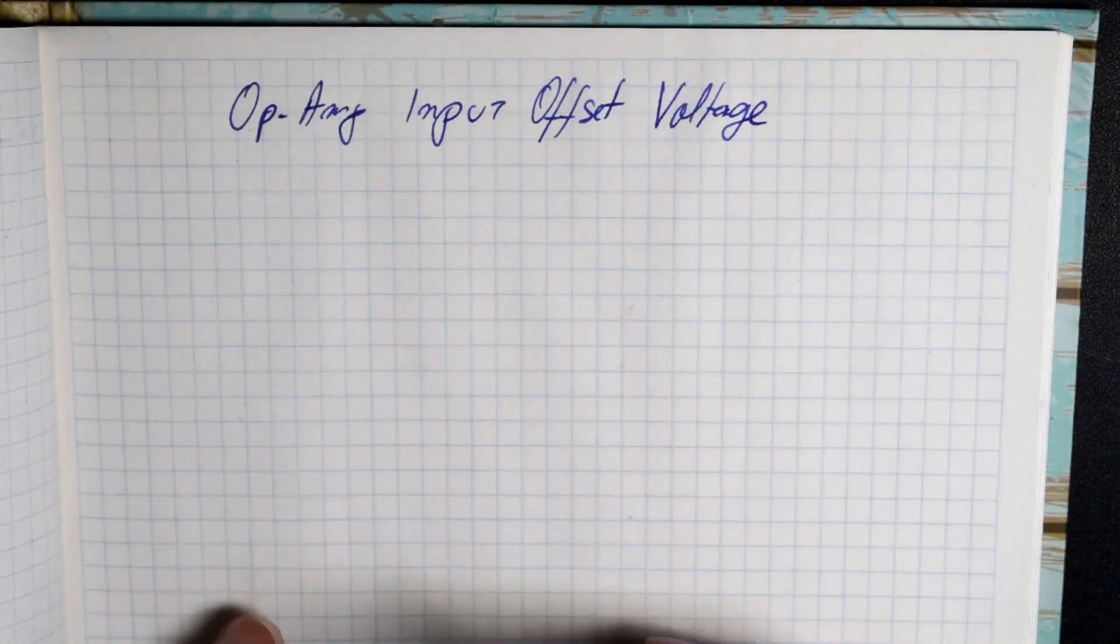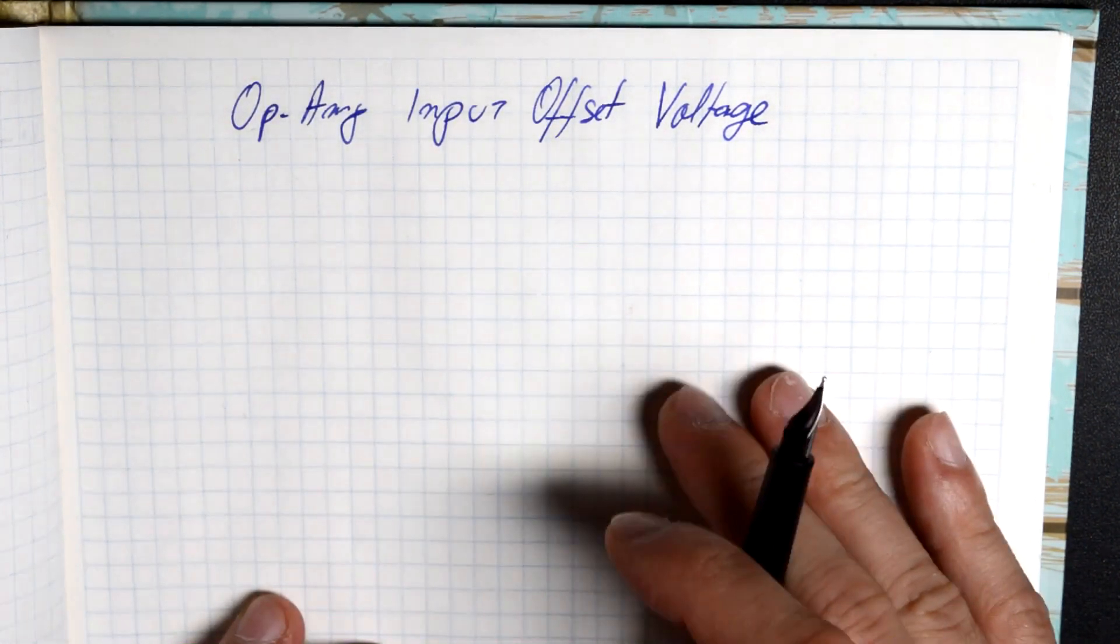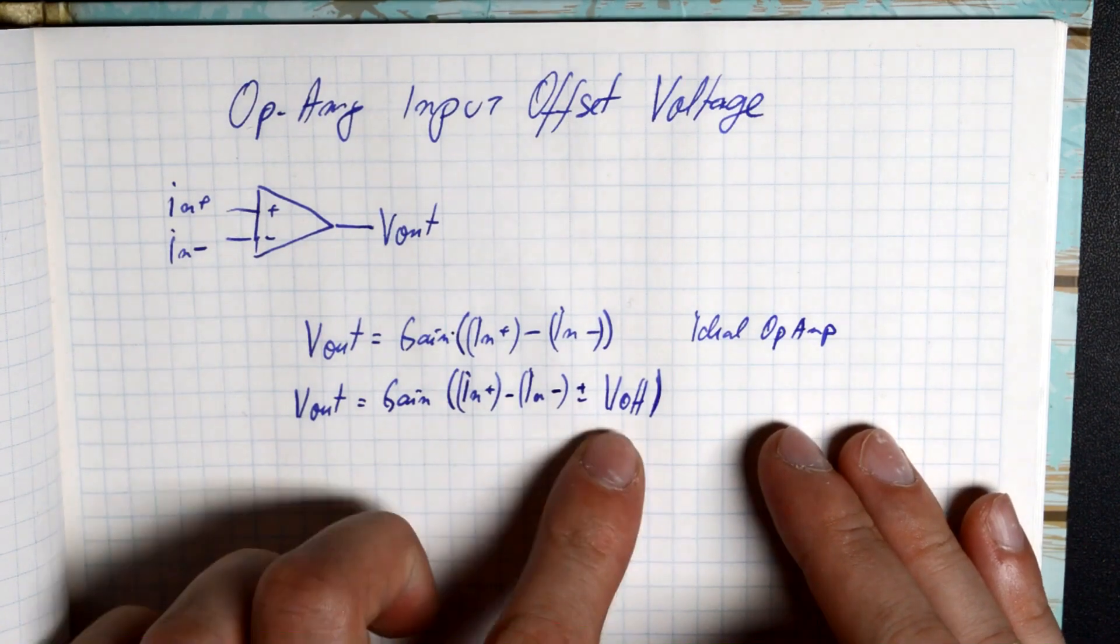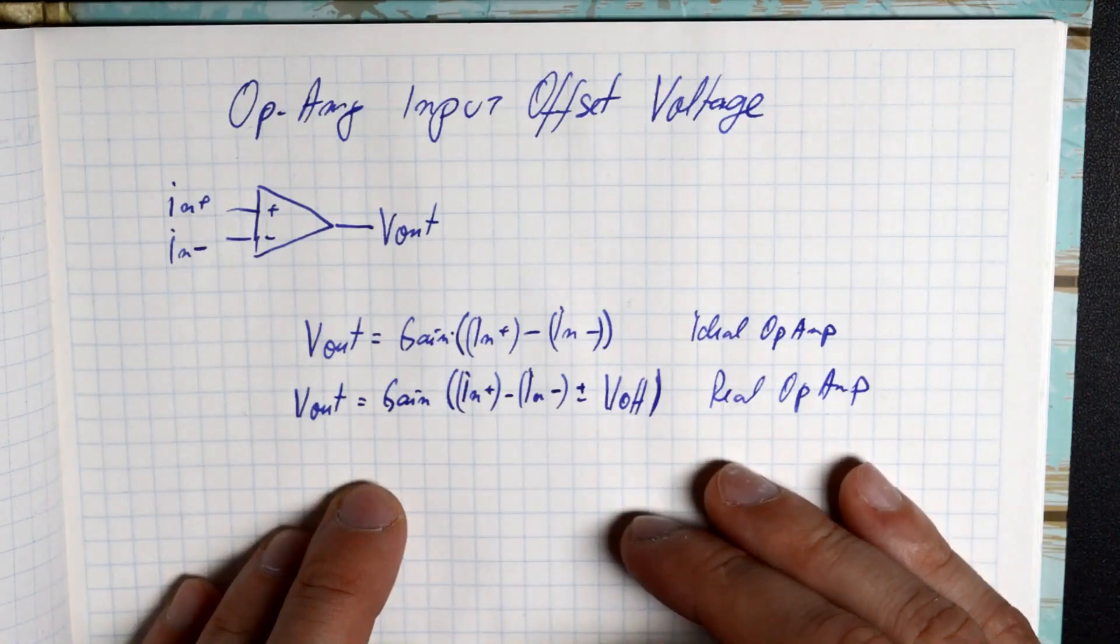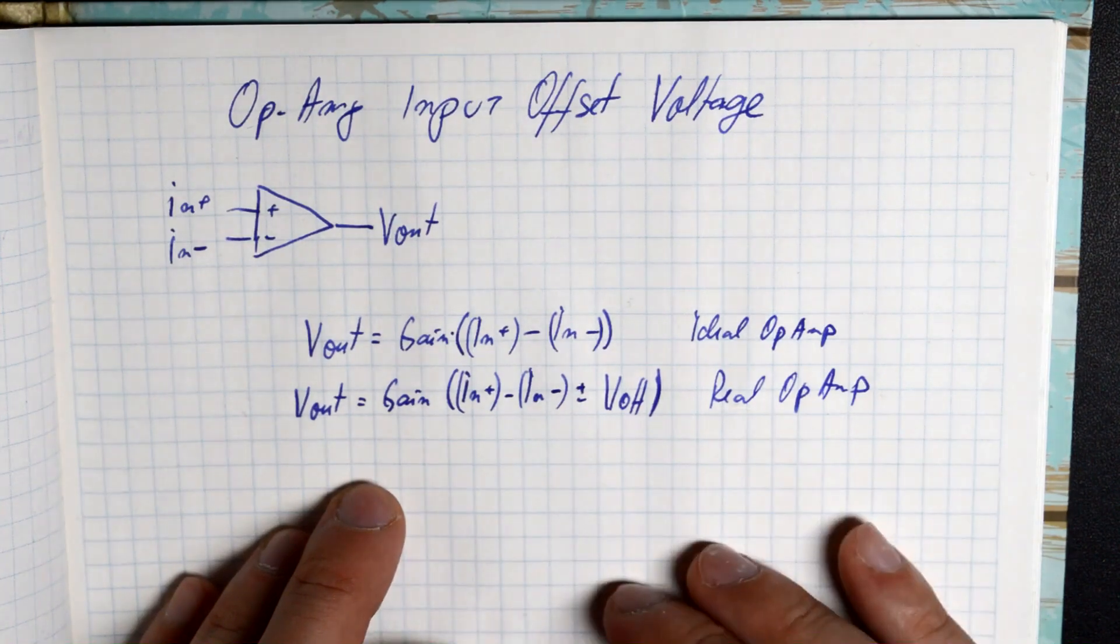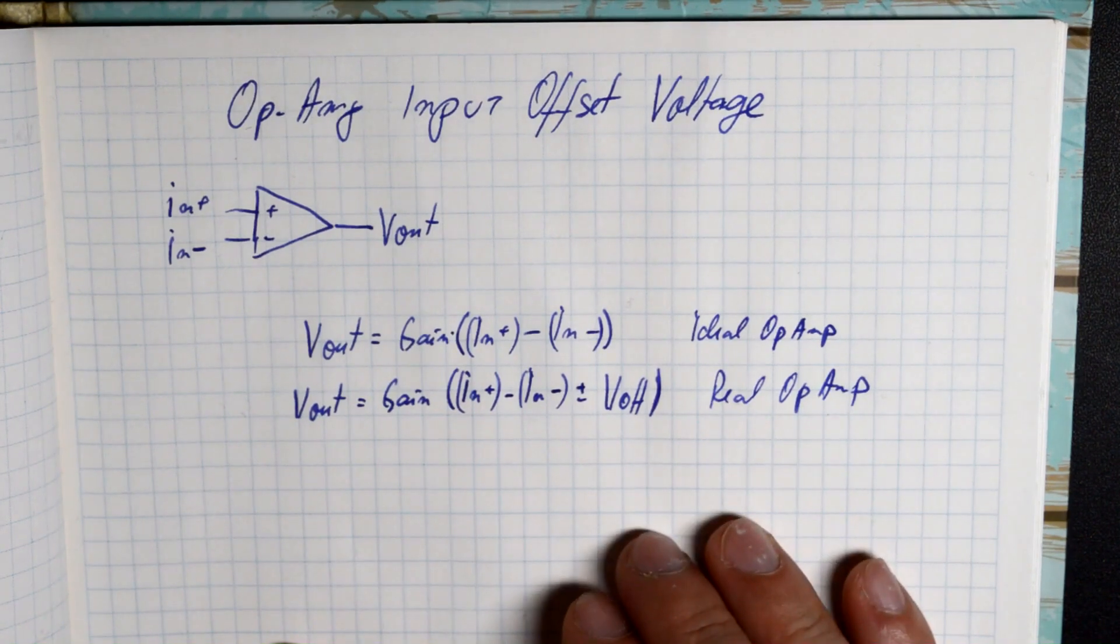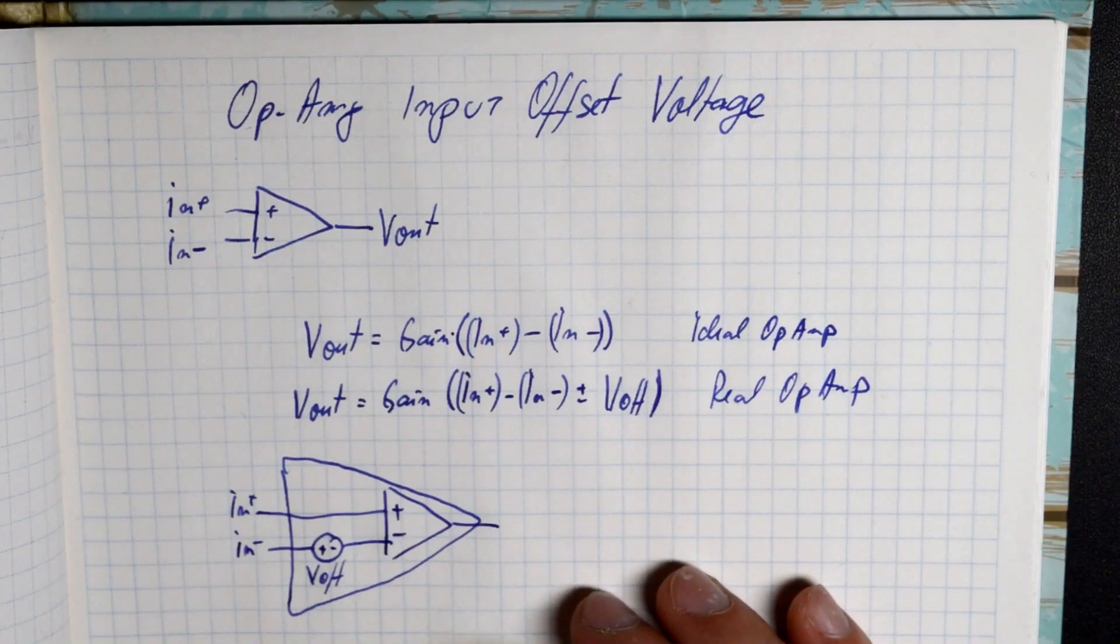So what is input offset voltage? Well, we can understand this by looking at the characteristic formula of the op-amp. The input offset is a measure of how precise our input comparator is and introduces this extra term in our basic formula. Depending on production distribution, the offset can be either positive or negative, and the datasheet will specify the typical value for this parameter. Now this offset can be represented schematically as an extra voltage supply on the op-amp input, and it works like an error source in any DC amplifier topology.